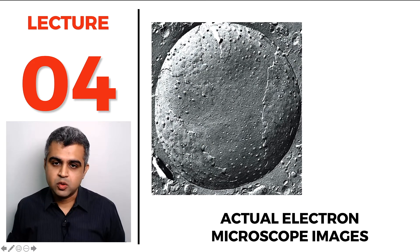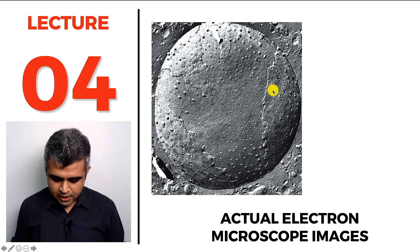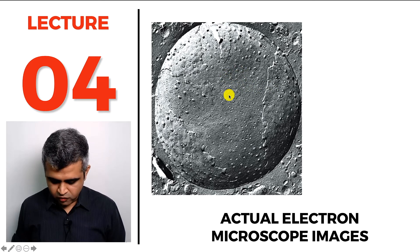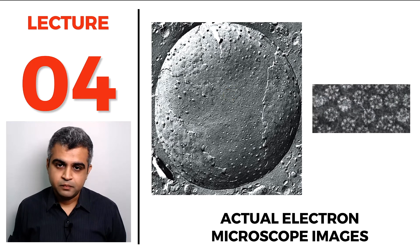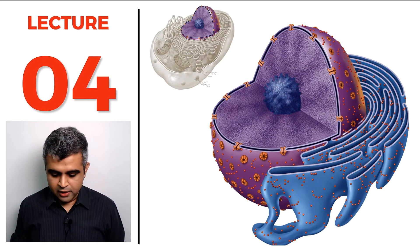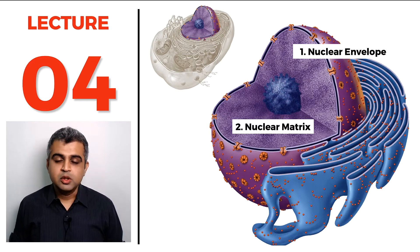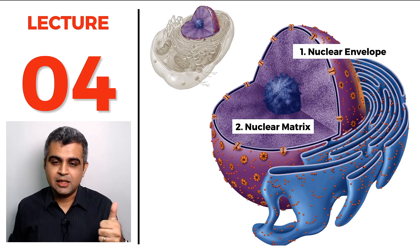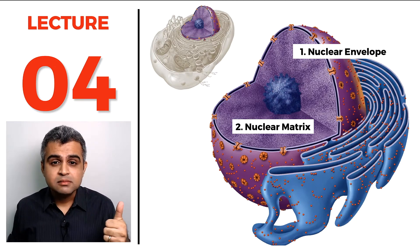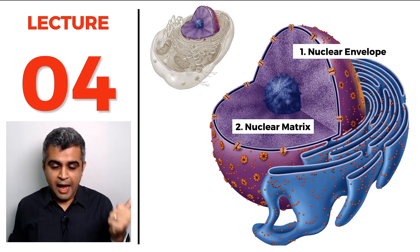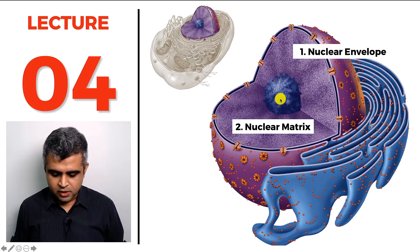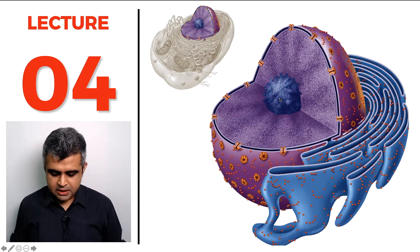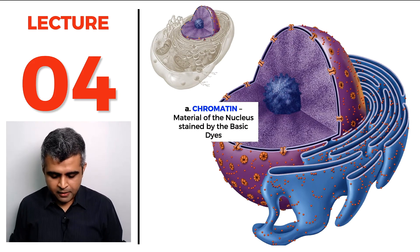We saw how the nuclear envelope looks under the electron microscope — outer membrane, inner membrane, and nuclear pores visible as dots. The nuclear matrix has two parts: a dark-staining chromatin, discovered by Fleming, and a central structure called the nucleolus. Chromatin is material of the nucleus stained by basic dyes and is essentially DNA with proteins.